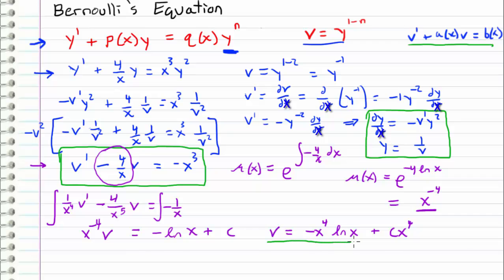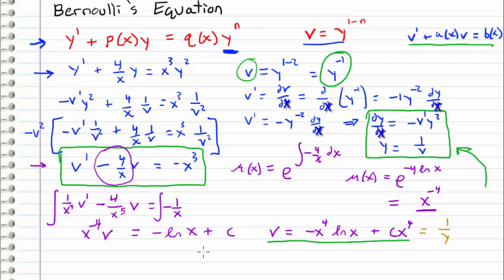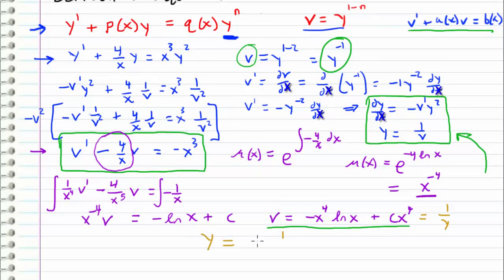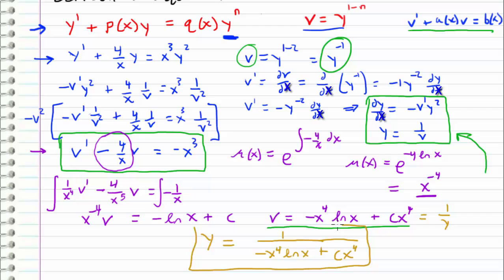This represents the solution in terms of v. To solve for v, we multiply both sides by x to the fourth: v equals negative x to the fourth times ln(x) plus C·x to the fourth. Now we convert back to y using our change of variables v = y to the negative 1, i.e., v = 1/y. Replacing v and solving for y gives: y equals 1 over (negative x⁴ ln(x) plus C·x⁴). That is our answer.